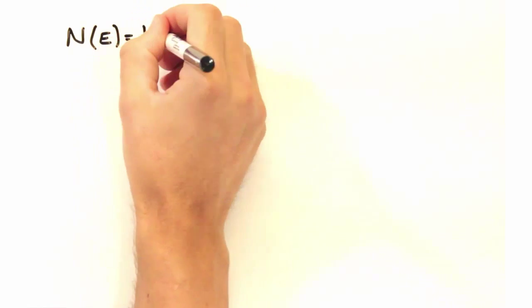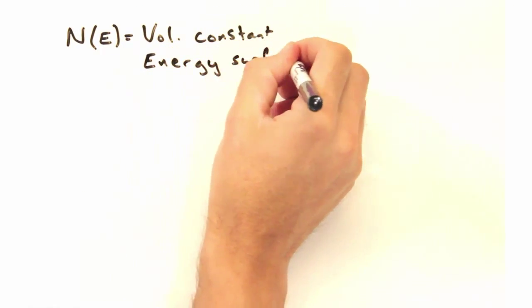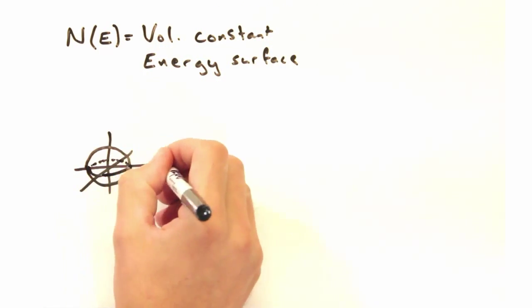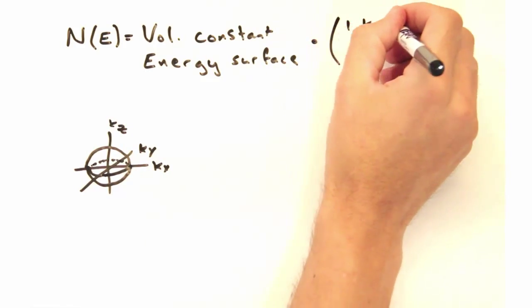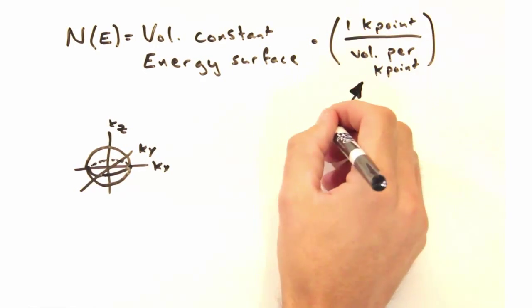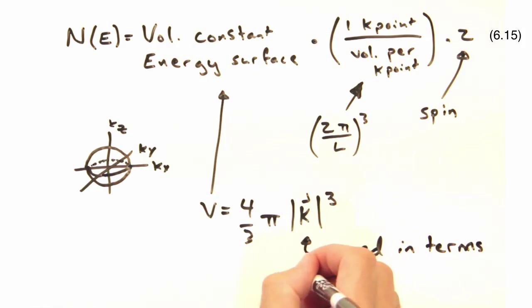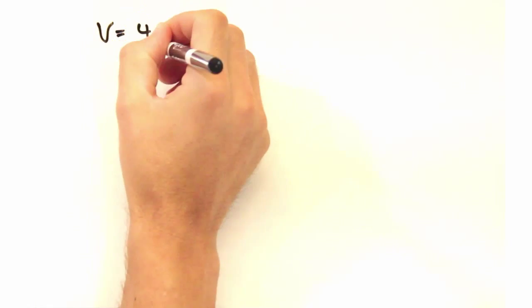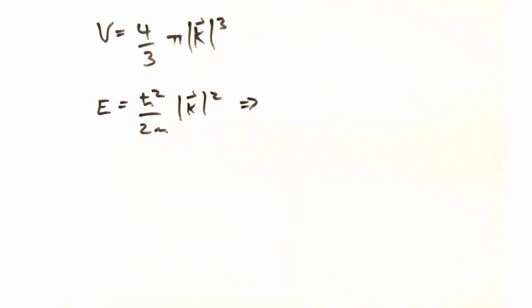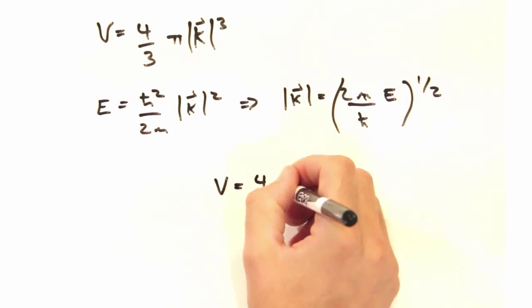And we already calculated the number of states for the traveling wave case in the last video by multiplying the volume of the constant energy surface by one k-point per spacing cubed by a factor of two for the two spin states of each electron. We're almost ready to take the derivative, we just need this in terms of energy. And we can get that by solving for k in terms of E from the dispersion relation.